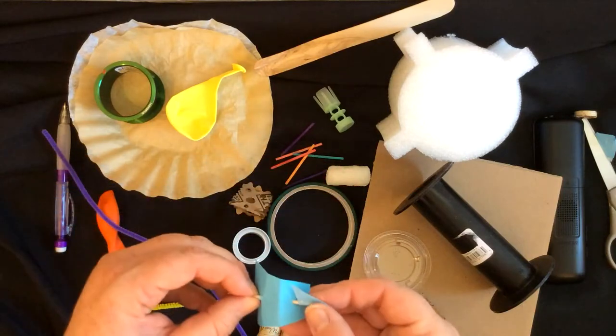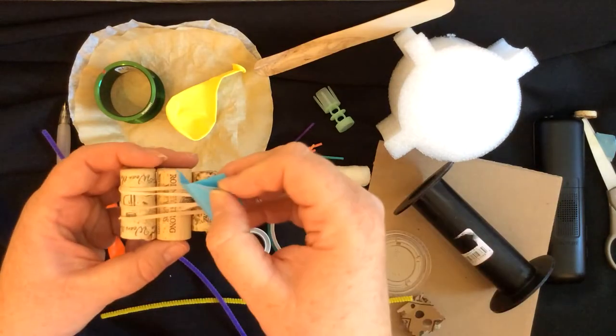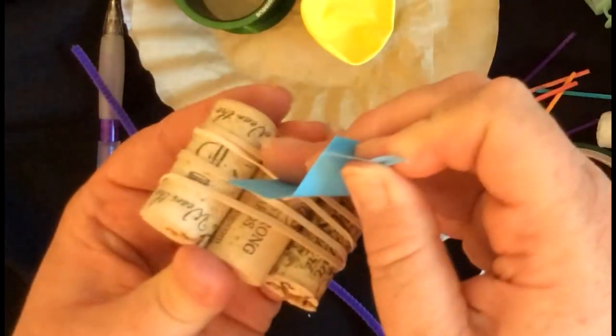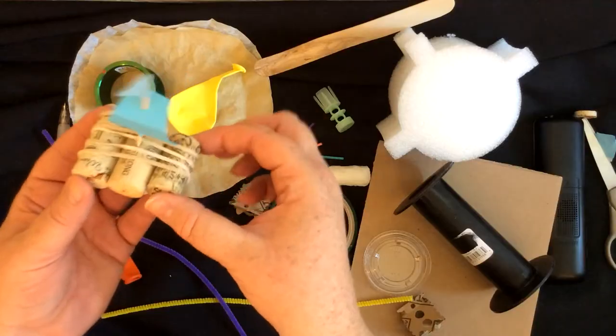So then you're going to take your pointy end and you're going to stick it into the middle cork. And then voila, you have a boat!